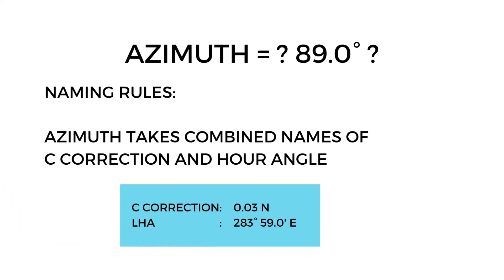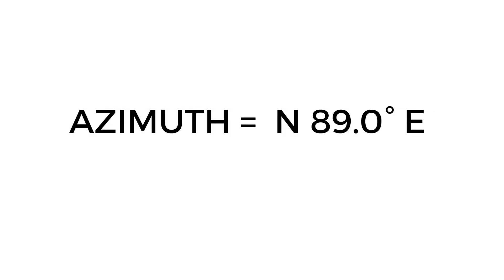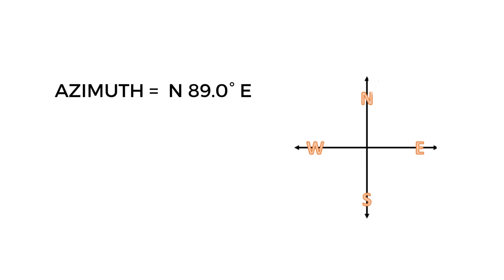So our azimuth is now N 89.0° E. We have to convert it into a 360-degree angle, and we should have a true bearing of 89.0 degrees true.